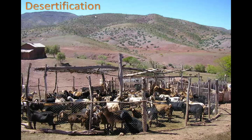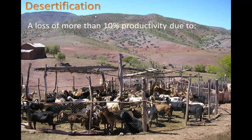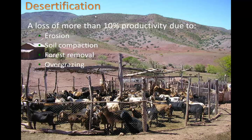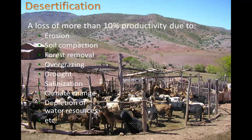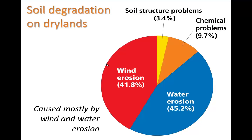Let's take a look at some ways in which soil can be degraded. One is desertification — a loss of more than 10% productivity of the land due to erosion, meaning how well it can grow food. Soil compaction is where the soil gets too hard and too pressed together. Forest removal through logging activities and overgrazing are also causes. Here you can see a large number of livestock — it takes a lot of vegetation to support this many goats, and there's not much vegetation left. This is a case of desertification. Drought, salinization of soil — too many salty minerals — climate change, and depletion of water resources can all affect the quality of the soil.